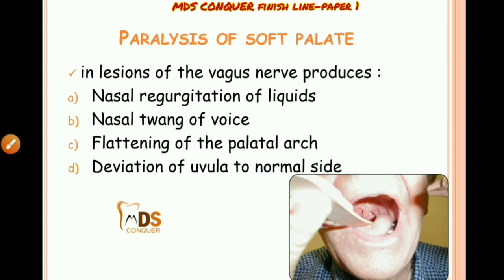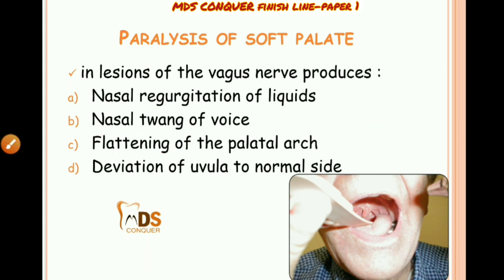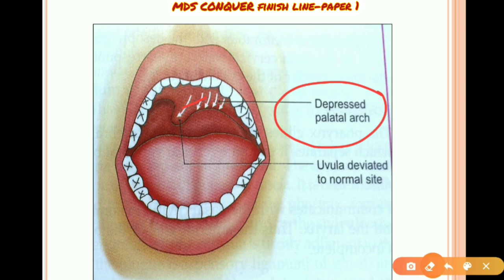Paralysis of the soft palate results from lesions in certain regions, causing nasal regurgitation, nasal twang of voice, flattening of the palatal arch, and deviation of the uvula. On examination, you will see a depressed palatal arch and the uvula deviated towards the normal side.